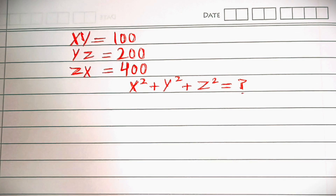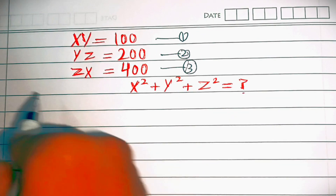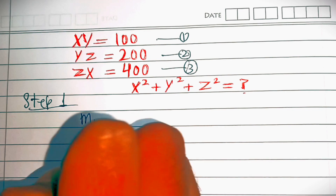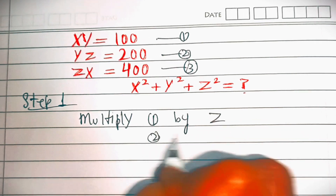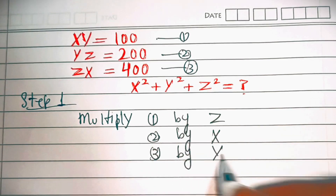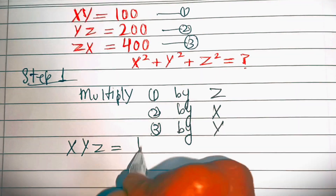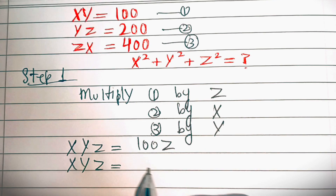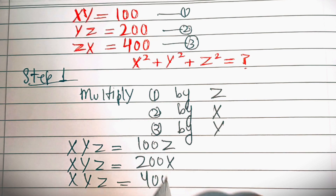So let's start. First of all, let's make this equation number one, this is equation number two, and this is equation number three. In step one, let's multiply equation one by z, equation two by x, and equation three by y. So equation one will become xyz equal to 100z, equation two will become xyz equal to 200x, and equation three will become xyz equal to 400y.